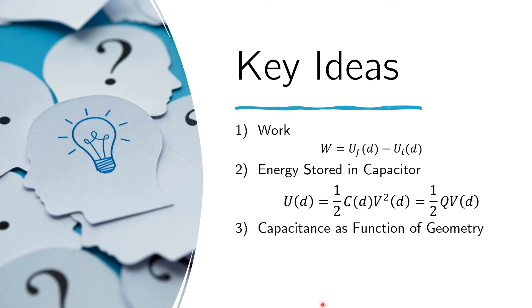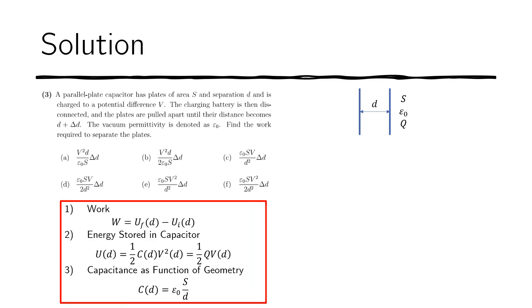Then we also recall the capacitance as a function of the geometry. In this case, the parallel plate capacitor. The capacitance is equal to this expression here. We have the coefficient of proportionality, which is the permittivity of free space epsilon naught. And the capacitance is proportional to the area of the plates and inversely proportional to the distance that is separating the plates.